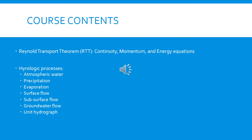In order to understand the hydrologic processes, we first need to cover the Reynolds Transport Theorem, which you studied in fluid mechanics in your second year — specifically the continuity, momentum, and energy equations. Then we will go through the hydrologic processes: atmospheric water, precipitation, evaporation, surface flow, subsurface flow, and groundwater flow. At the end, we will see how to use the unit hydrograph to understand all these hydrologic processes.